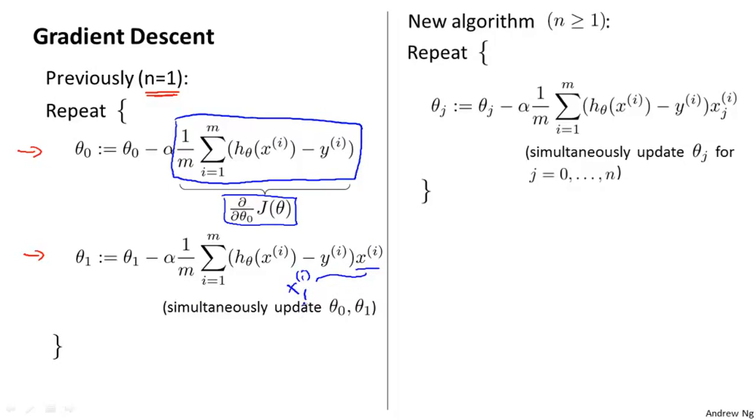Let's look at the new algorithm when we have more than one feature, when the number of features n may be much larger than one. We get this update rule for gradient descent. For those of you who know calculus, if you take the definition of the cost function and take the partial derivative of the cost function j with respect to the parameter theta j, you find that that partial derivative is exactly that term that I've just drawn the blue box around. And if you implement this, you will get a working implementation of gradient descent for multivariate linear regression.